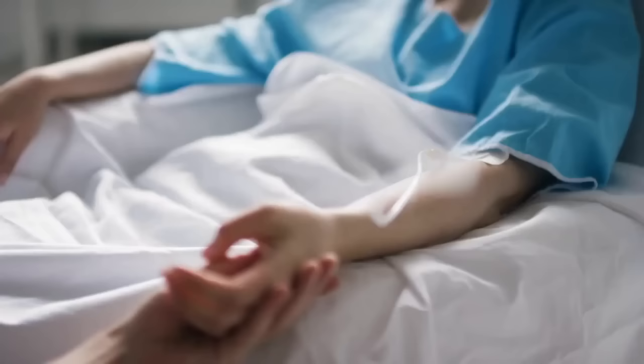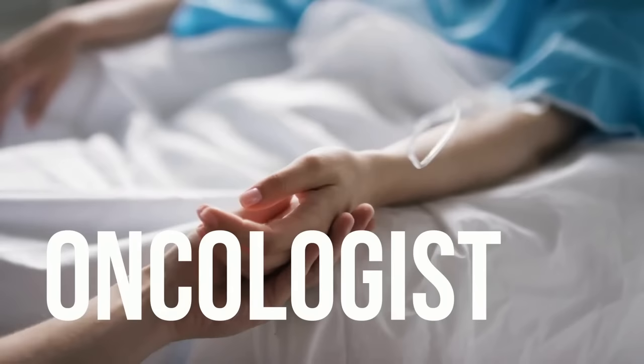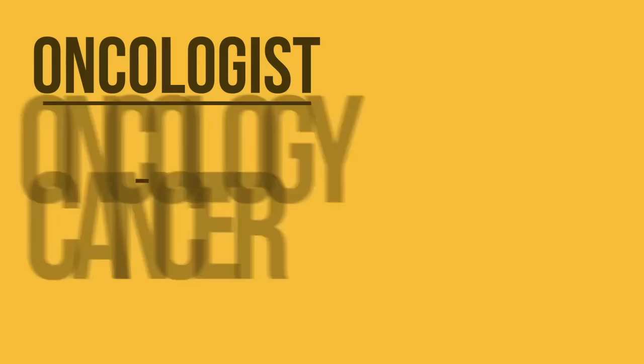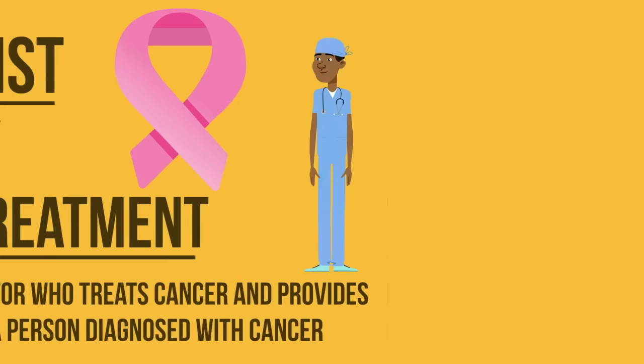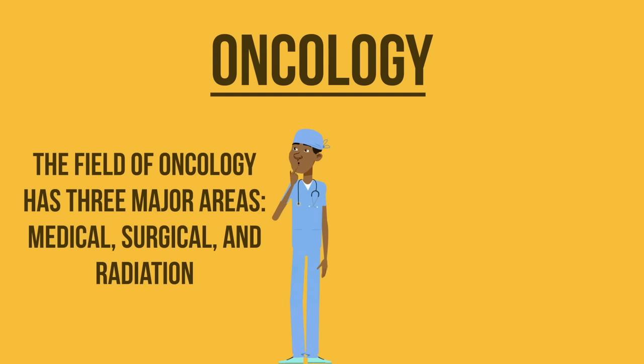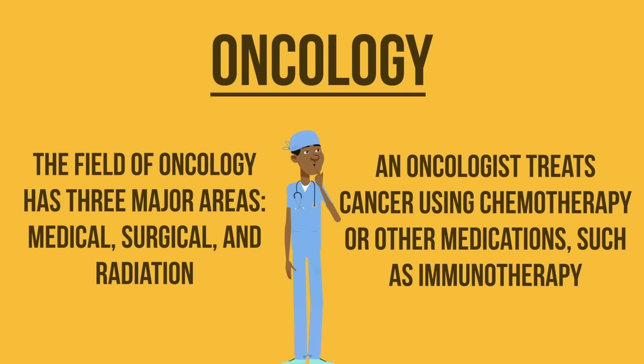Our next doctor type is an oncologist. An oncologist works in the area of oncology, more commonly known as cancer treatment. These are doctors who treat cancer and provide medical care for a person diagnosed with cancer. In oncology, there are three major areas: medical, surgical and radiation. An oncologist treats cancer using chemotherapy or other medications such as immunotherapy.